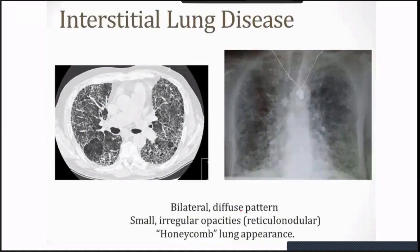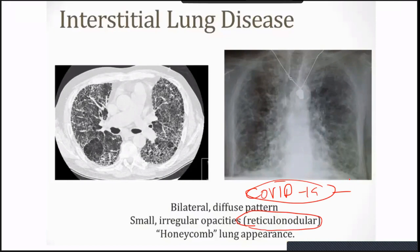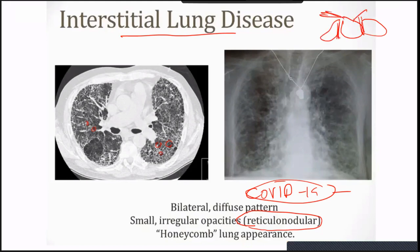Interstitial lung disease shows a bilateral diffuse pattern with irregular opacity — we call it reticulonodular opacity. This became very well known during COVID-19, described as organizing pneumonia. The lung shows honeycombing. In interstitial lung disease, the tissue between the alveoli — the interstitial tissue — becomes fibrotic, while the alveoli and capillaries look relatively normal, and oxygen transport between alveoli and capillaries is normal.